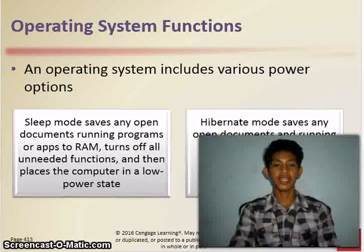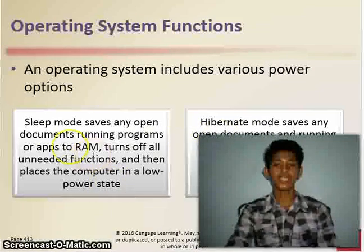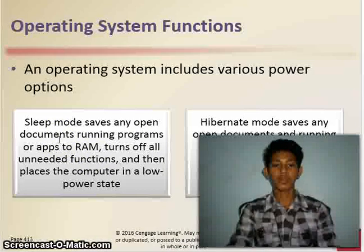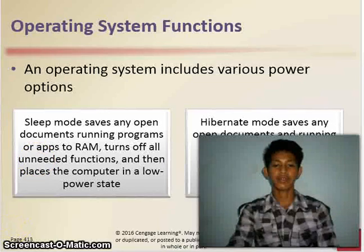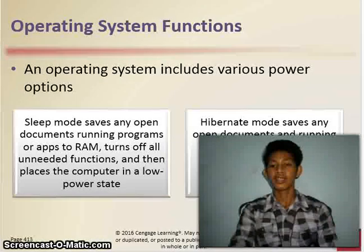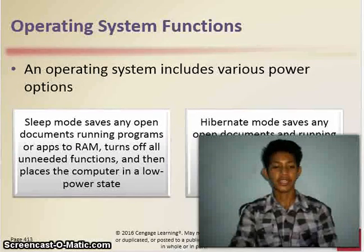An operating system includes various power options. It has sleep mode and hibernate mode. Sleep mode saves all open documents and running programs or apps, turns off all unneeded functions, and places the computer in a low-power state. Hibernate mode saves any open documents and running programs or apps to an internal drive before removing power from the computer or device.